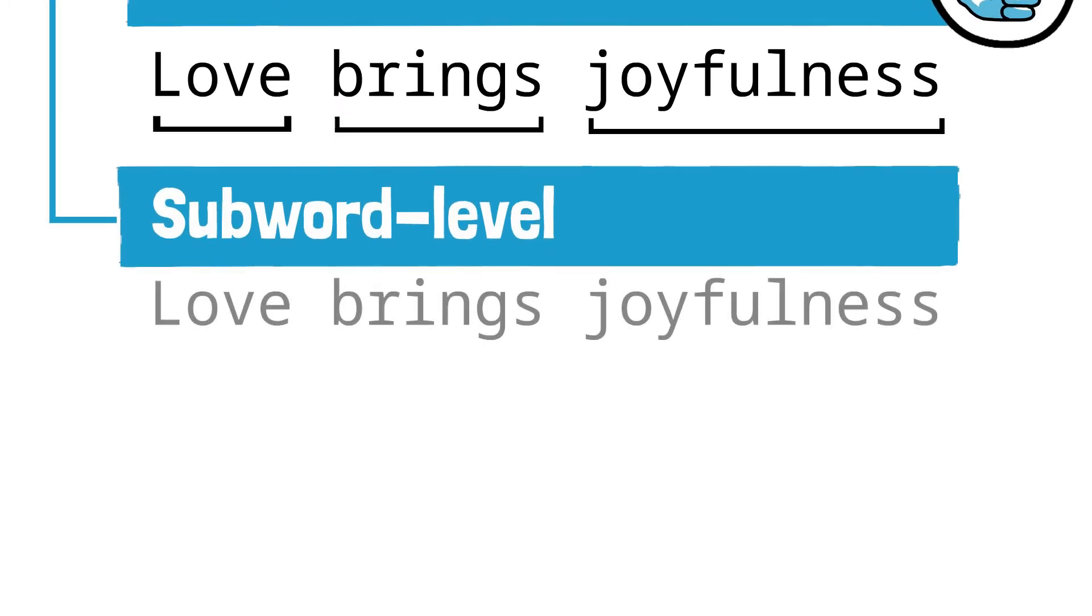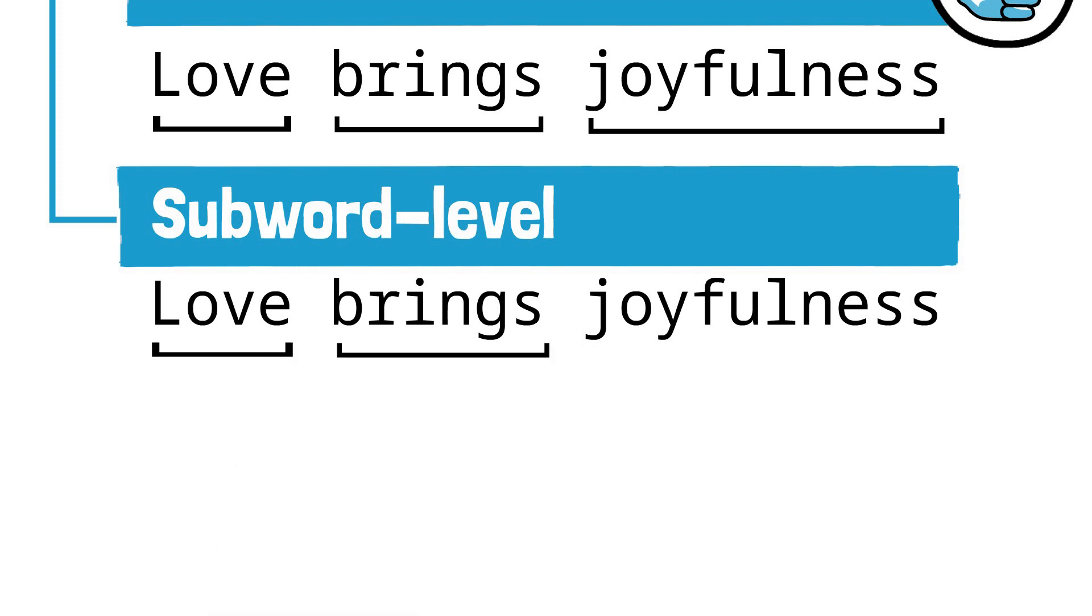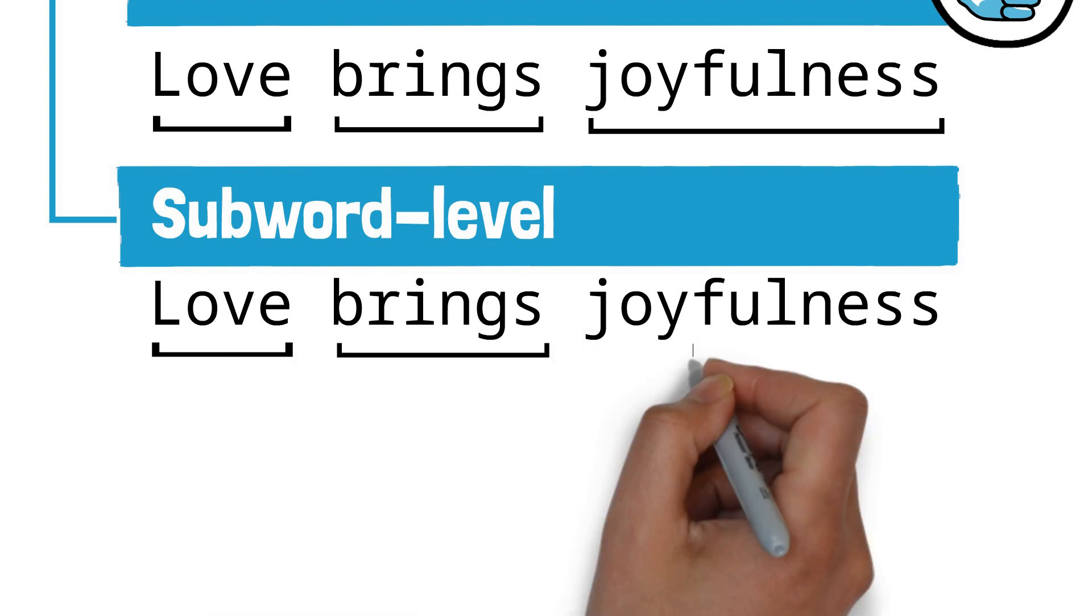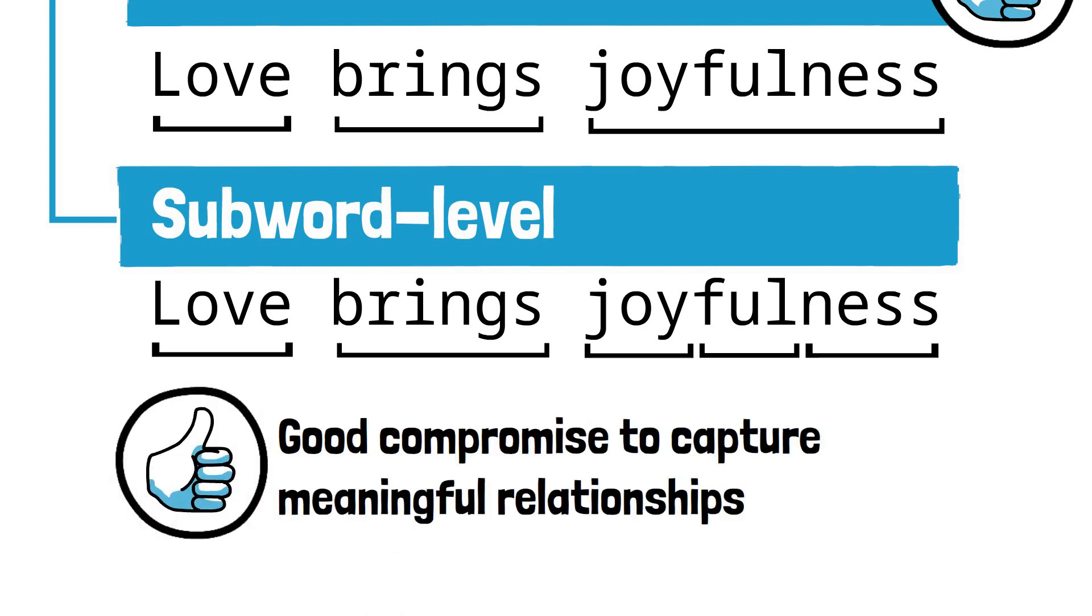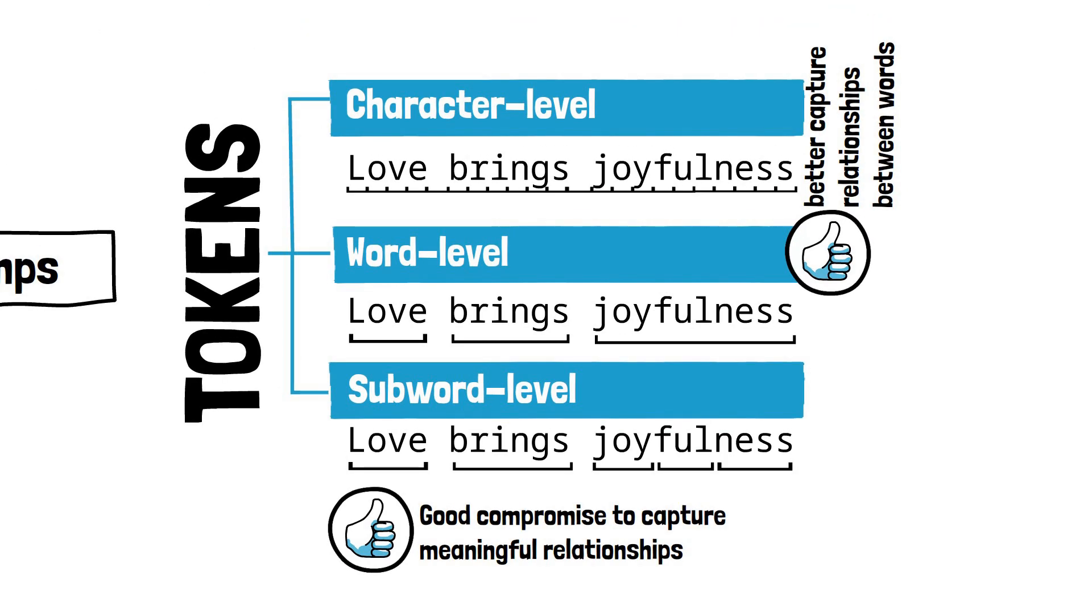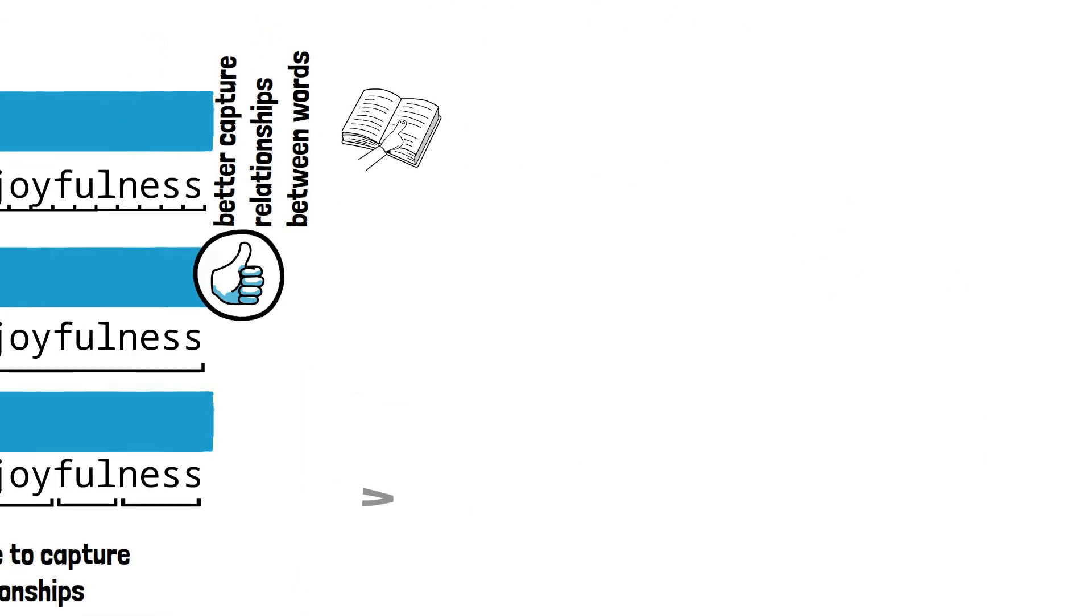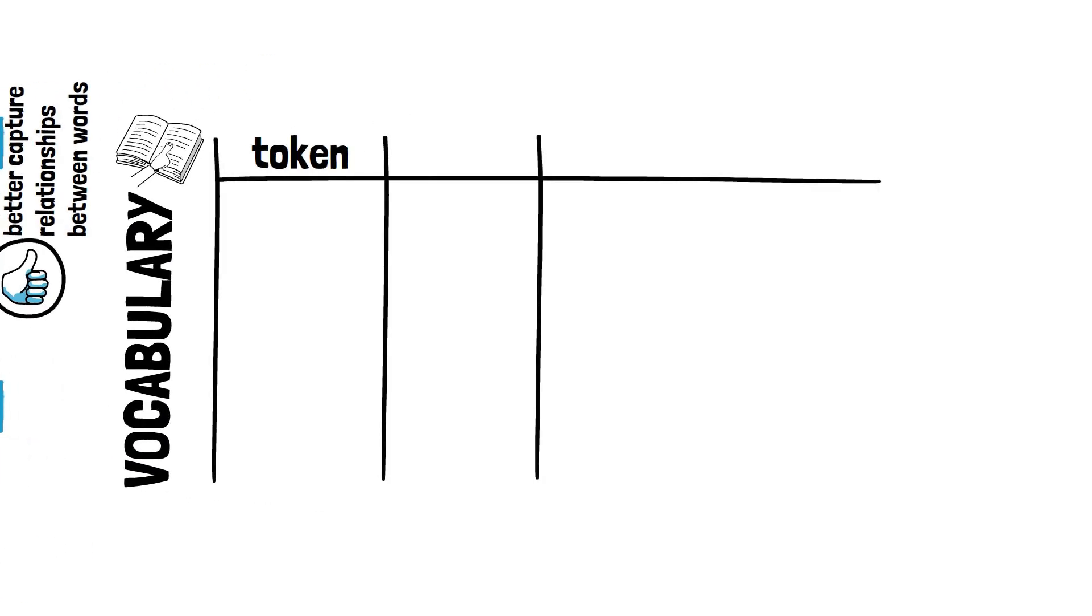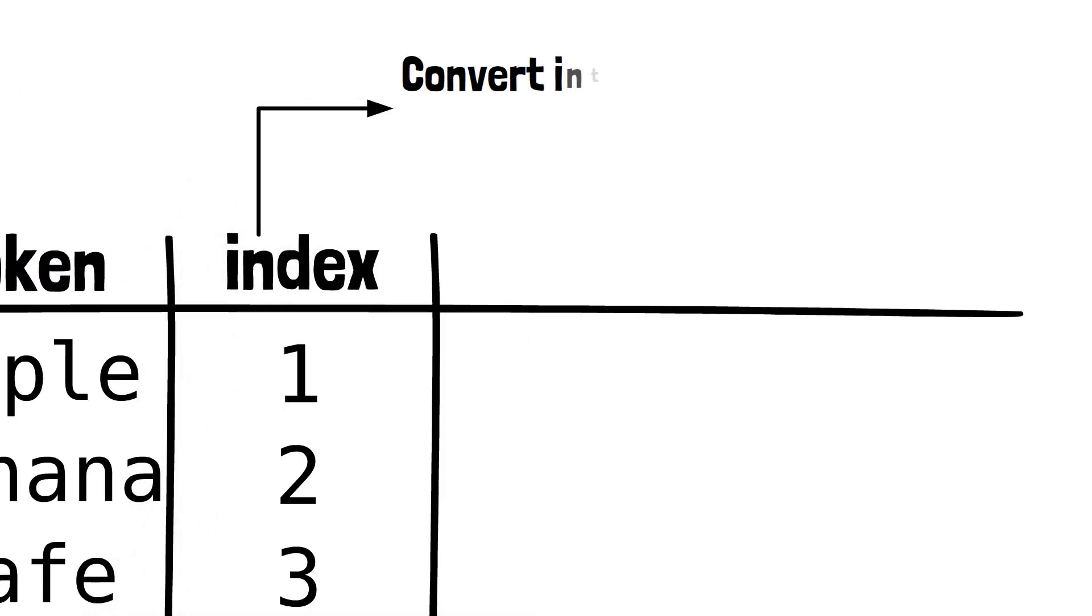A middle ground between character and word tokenization is subword tokenization. Here, common words get a slot in the vocabulary, but more complex or less common words can be broken down into smaller pieces. This is what most modern language models use. Once we have determined the tokens of a language model, we can arrange them in a fixed order vocabulary so that we can assign each token its unique index.